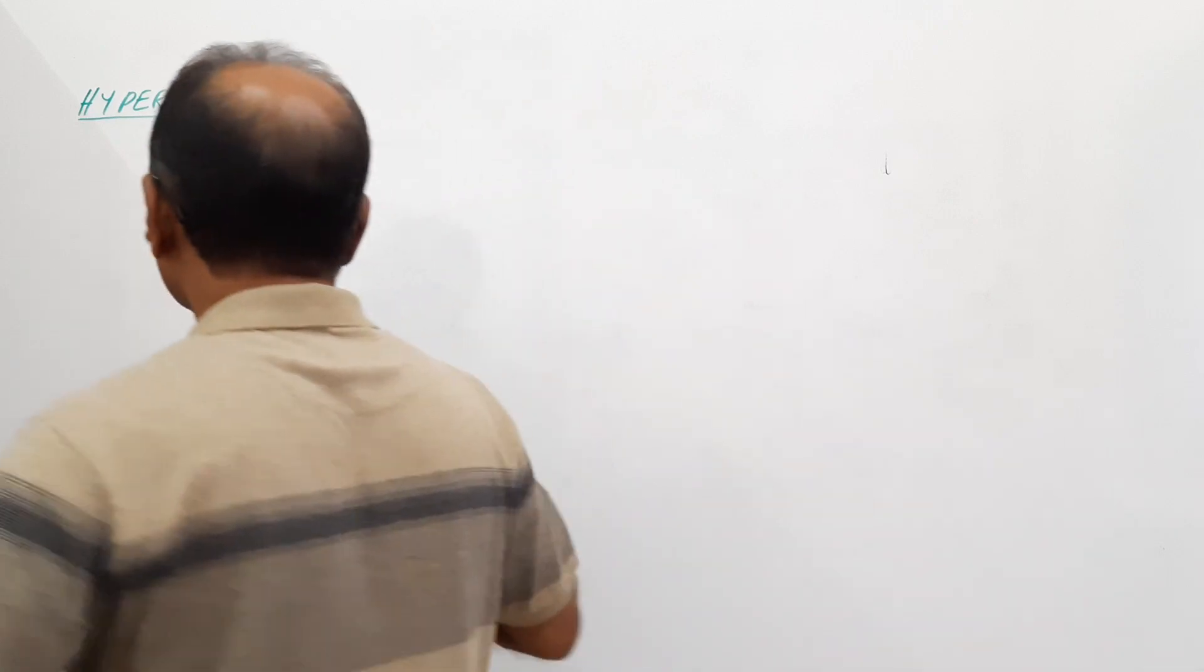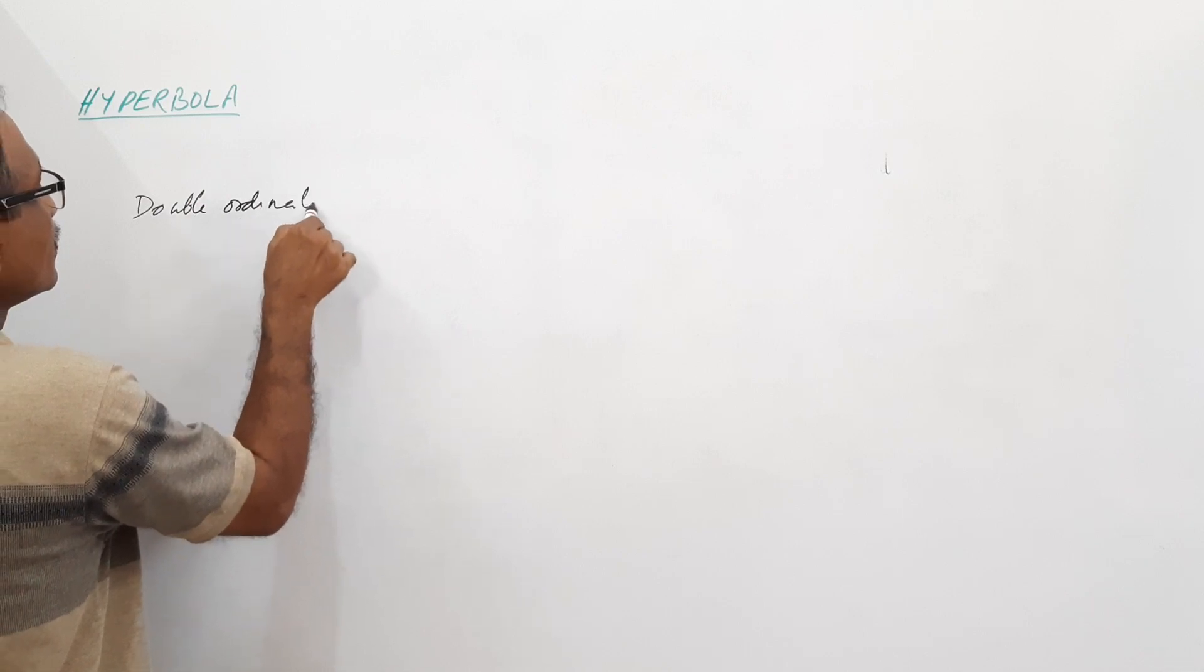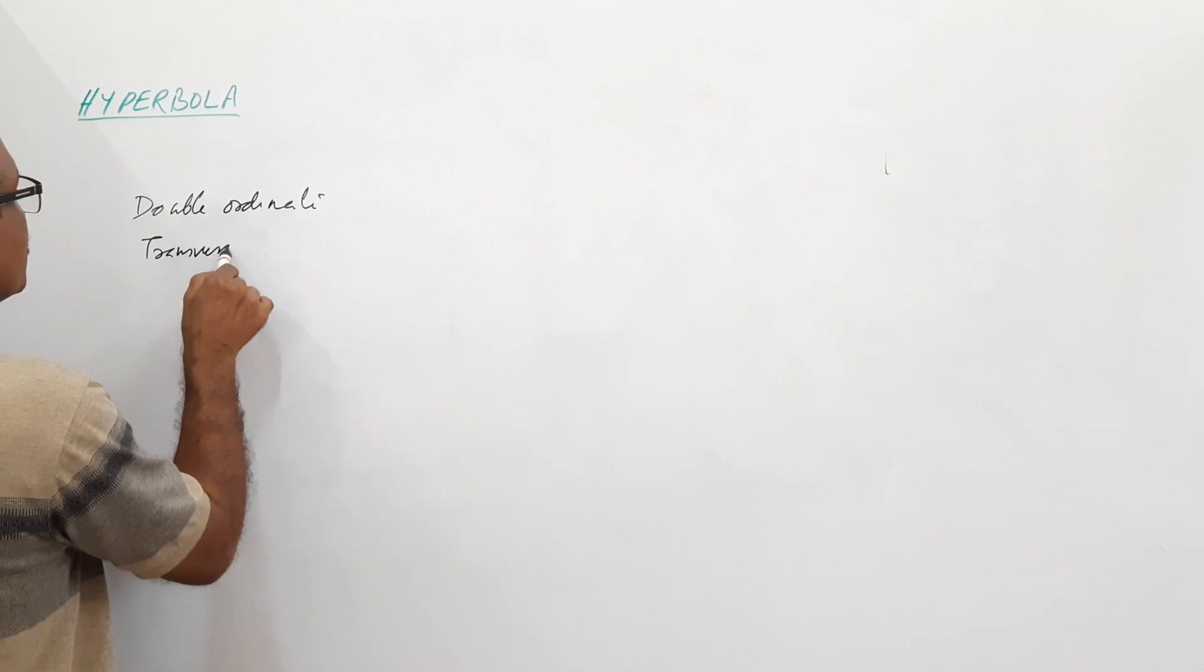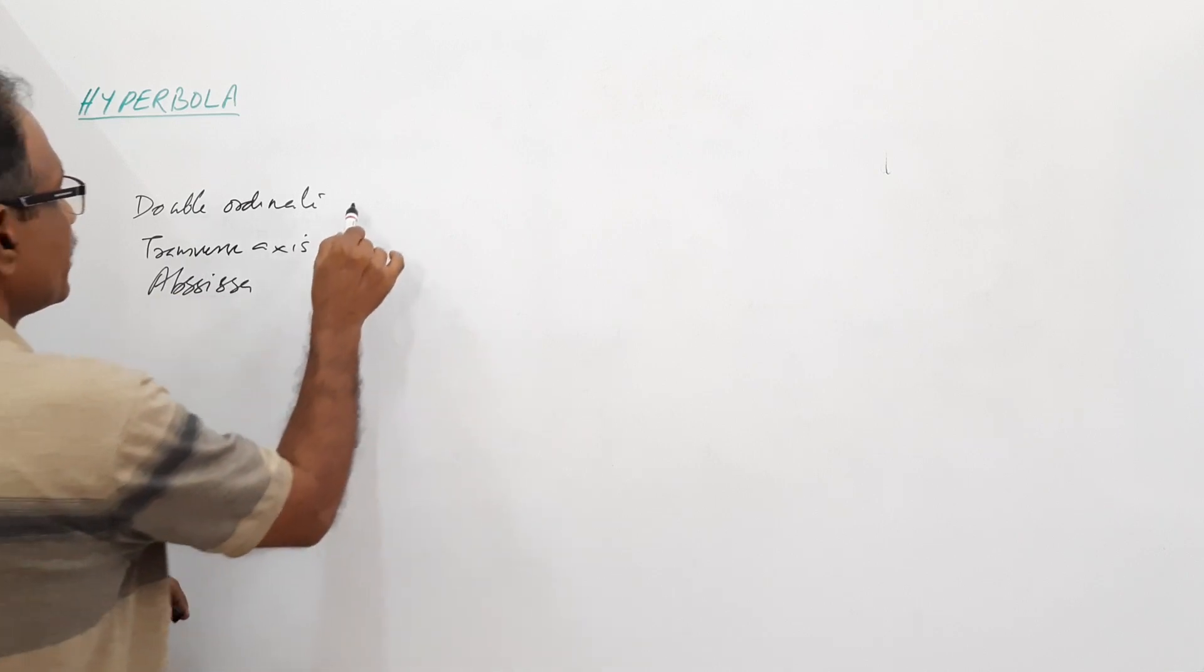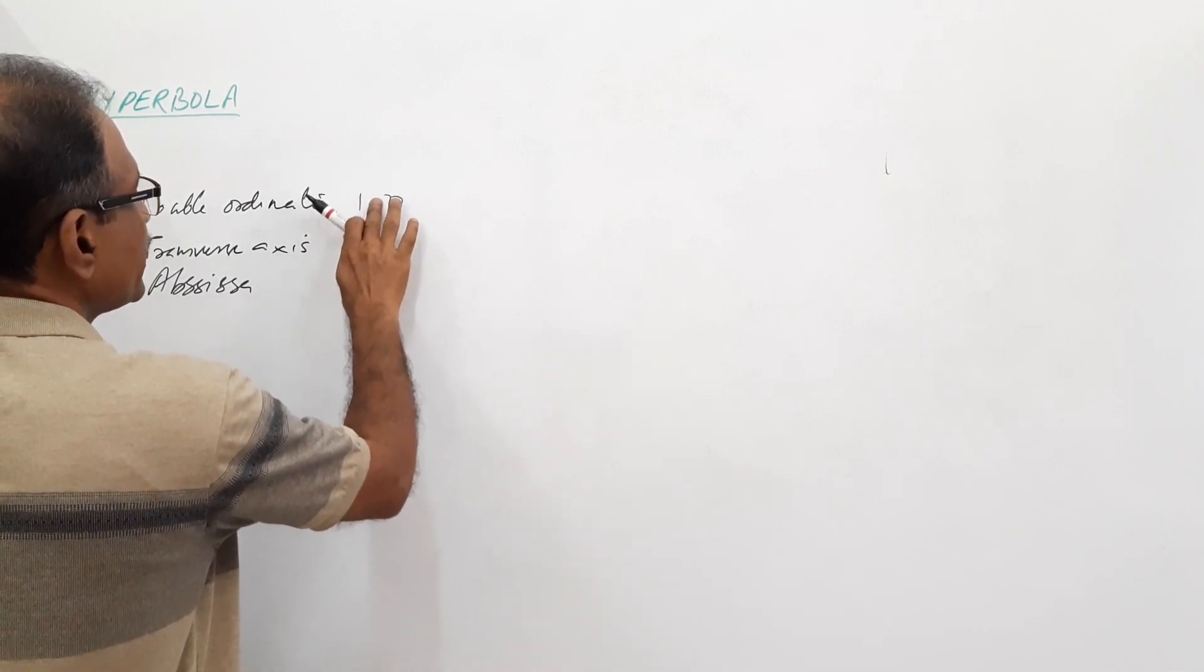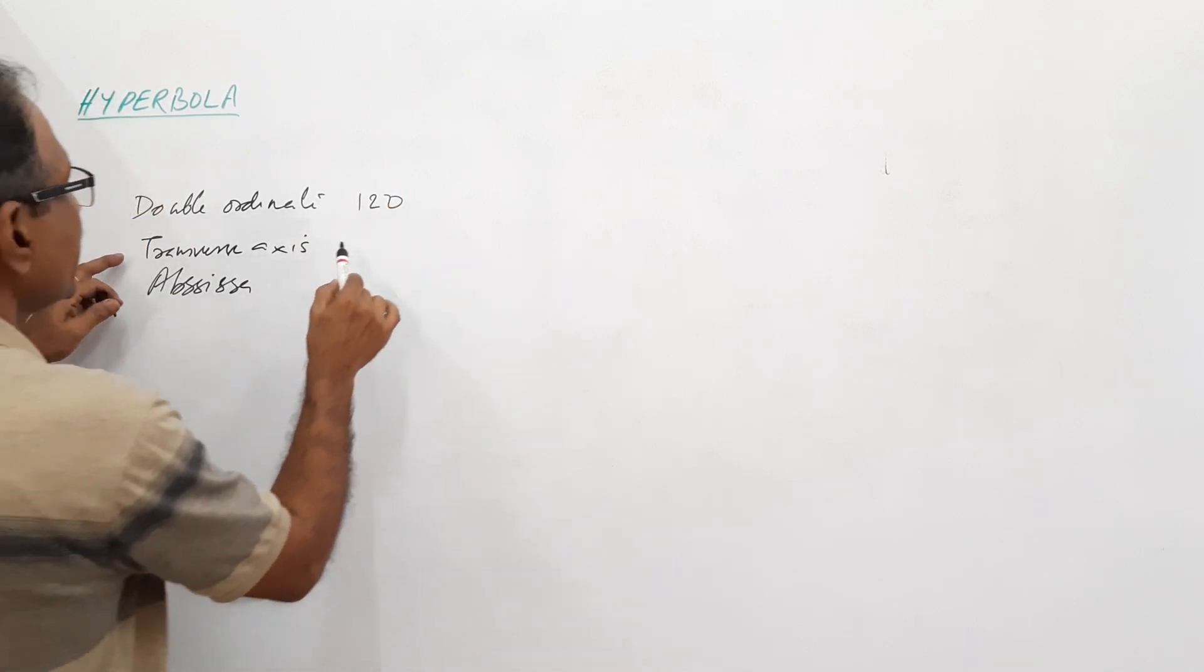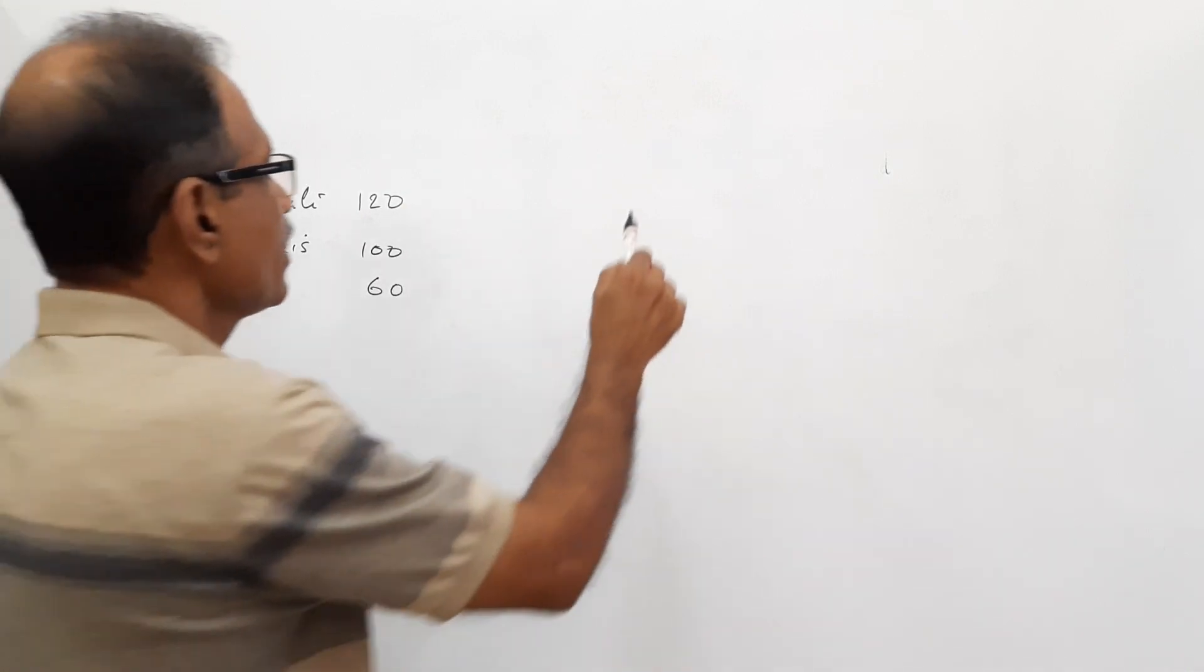Hi students, welcome to engineering graphics channel and Dr. Vinod Kumar. We are going to see how to draw a hyperbola given double ordinate, transverse axis and abscissa. Double ordinate is 120, transverse axis is 100, and abscissa is 60. Let this be the design. We draw a rectangle.